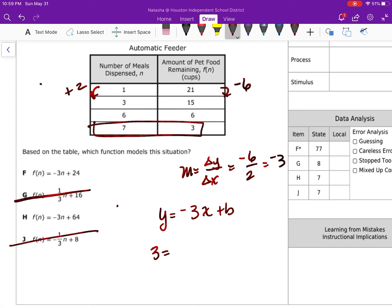So this is going to become 3 is equal to negative 3 times 7 plus b. That becomes 3 is equal to negative 21 plus b. I'm going to add 21 to both sides. That's going to give me b is equal to 24.